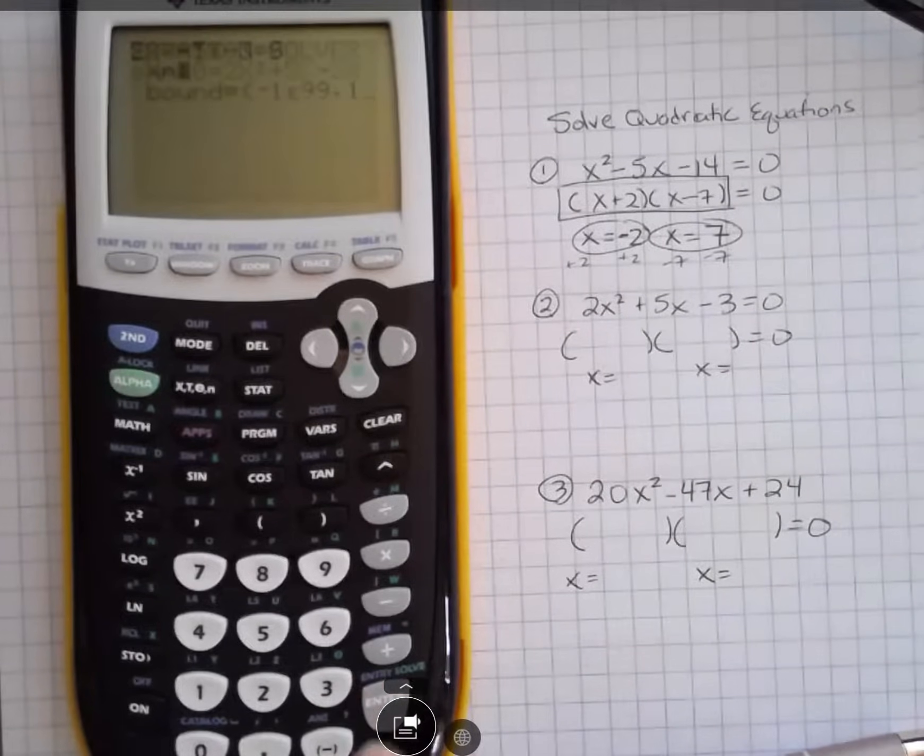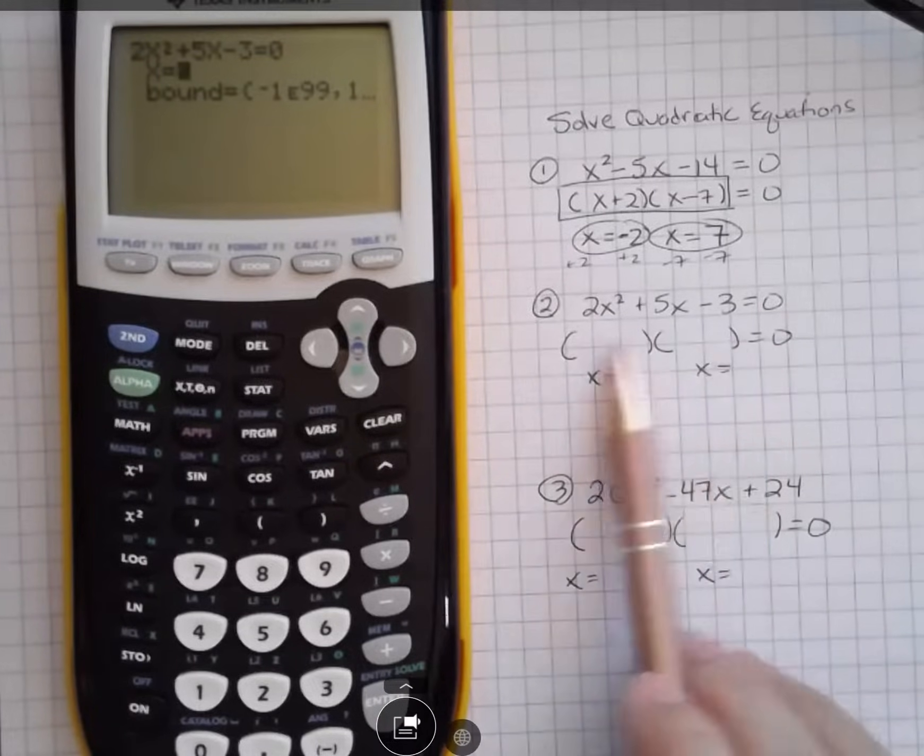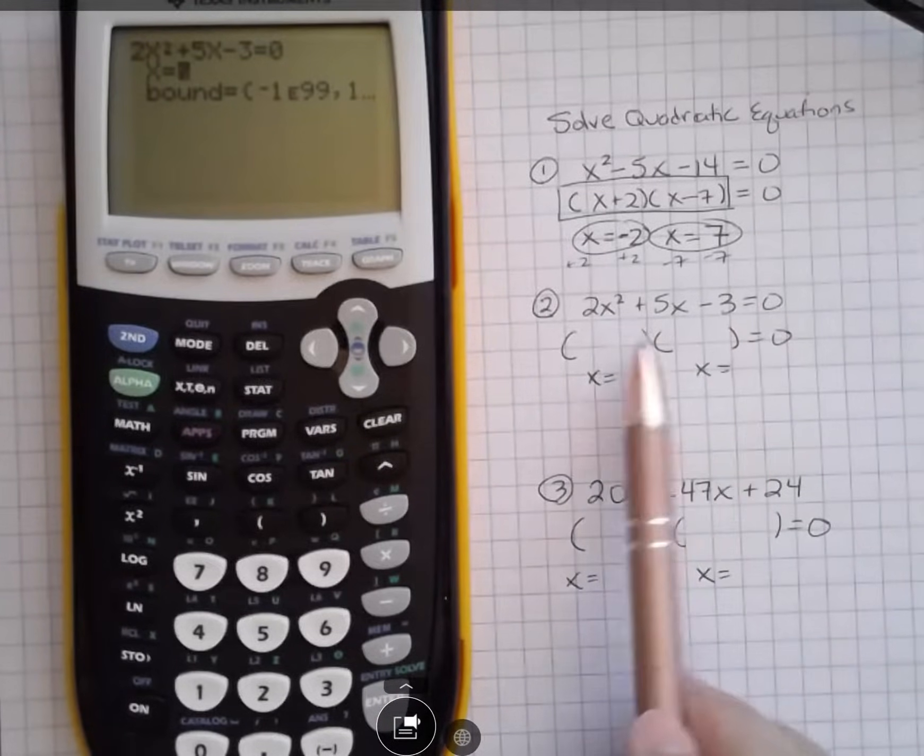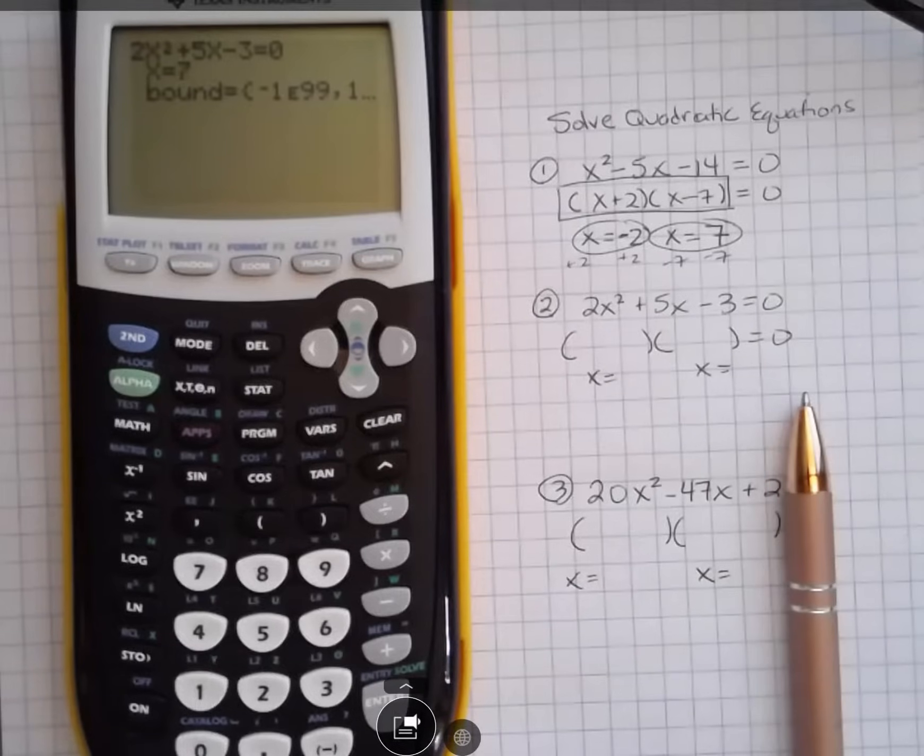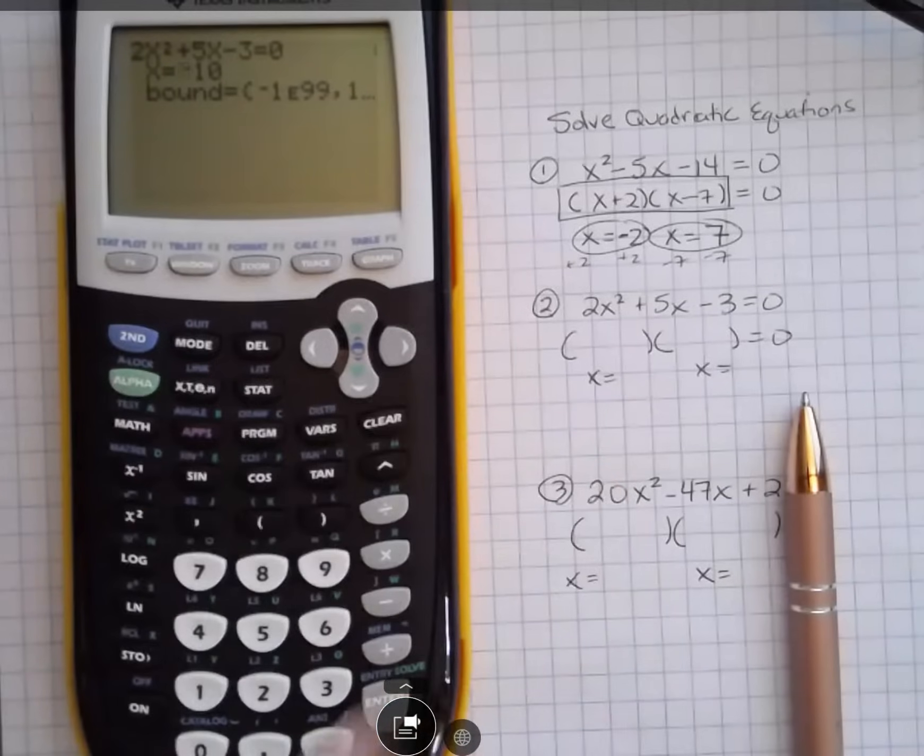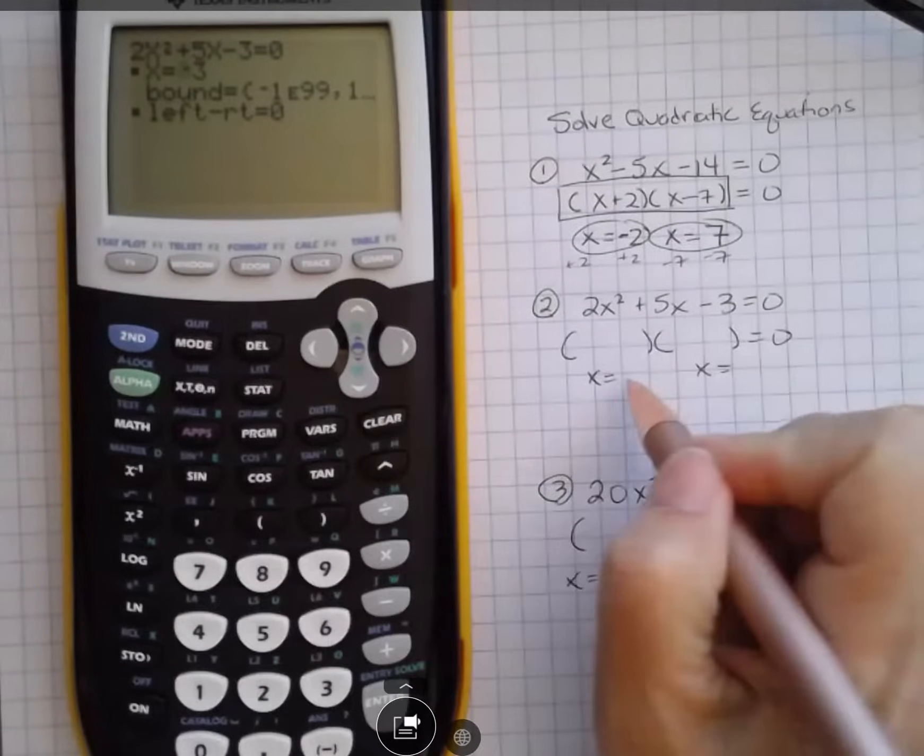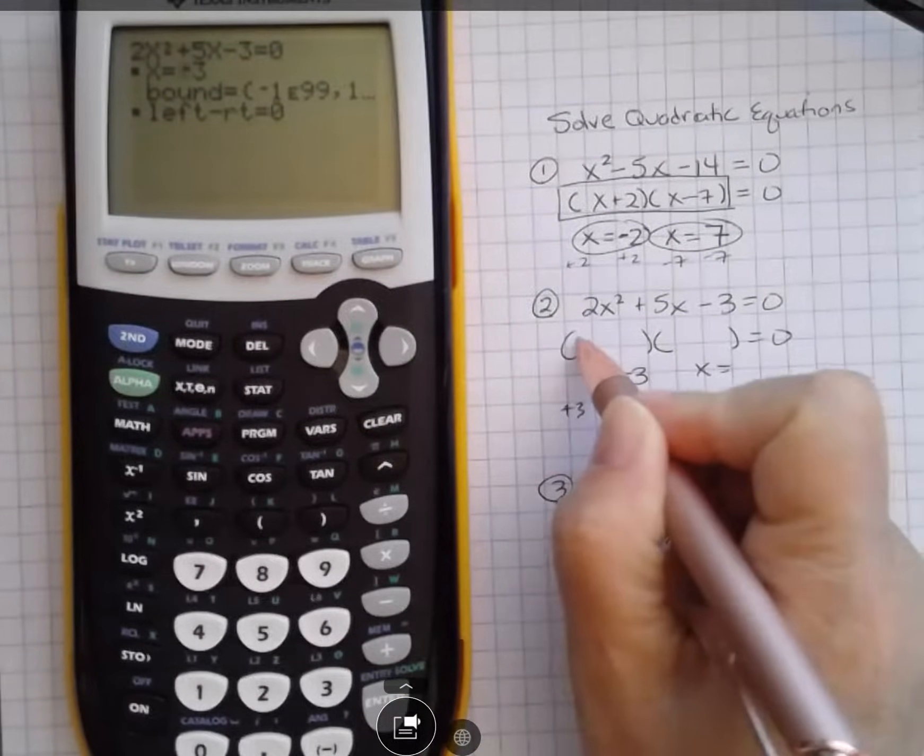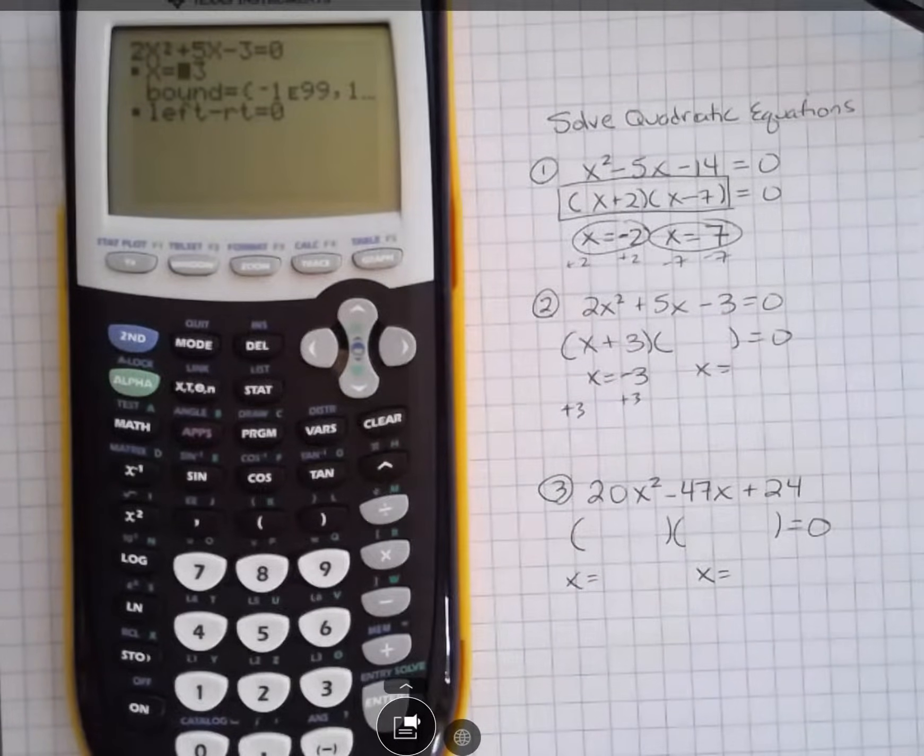Now again, for this one, I know that I'm going to have a positive and a negative answer, because this minus says I'm going to have a plus and a minus in here. Since I know I have one of each, I'm going to start with my negative 10 choice and hit Alpha Solve, and that's going to give me my answer of negative 3. Remember, if I move that to the other side, it would change sign, so that would give me x plus 3 as one of my factors.